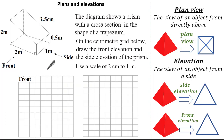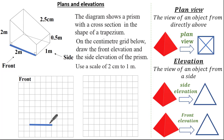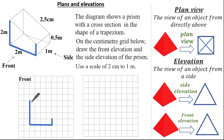A nice strategy is to color code each length and do one length at a time. Looking at the front elevation first: this length is 2 meters, and remembering the scale of 2 centimeters per meter, that gives us 4 centimeters on the grid. This height is 0.5 meters, so that's 1 centimeter on the grid. Next, this length is also 2 meters, so again 4 centimeters. Lastly, I don't even need to calculate the final length — I can simply connect.